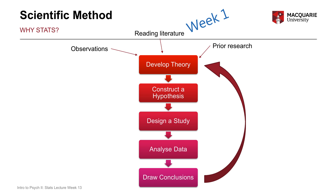Based on our theory, once we have a framework for understanding a certain aspect of human behavior, we then tend to develop a hypothesis — a prediction about what might happen in a new situation or context that we don't yet have the answer to. We construct a hypothesis based on our theory to say what we think might happen under certain new conditions, but we don't yet know if that will be the case. Once we have our hypotheses, we need to design a study that can test them — the study design needs to be appropriate to the actual hypothesis and directly test the prediction.